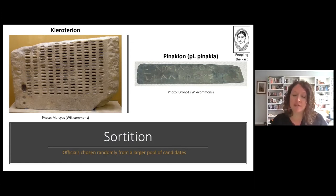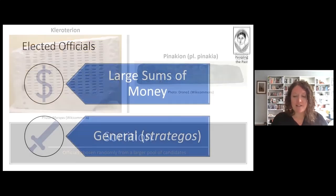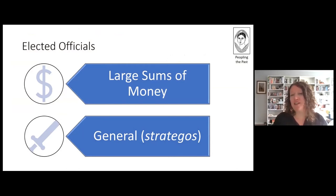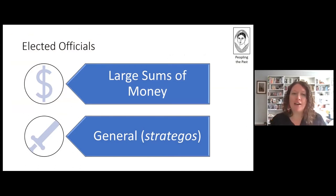However, there were still some elected officials. This includes two main categories: those who handled large sums of money — the logic being that if they embezzled, which definitely happened, it could be taken out of their estate — and the generals, because they wanted their expertise.